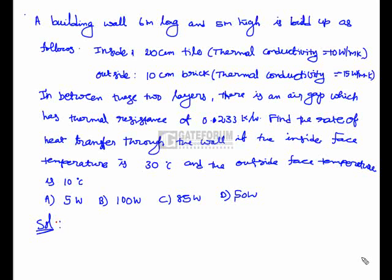A building wall 6m long and 5m high is built as follows: inside 20cm tile with thermal conductivity of 10 W/mK, and outside 10cm brick with thermal conductivity of 15 W/mK. In between these two layers there is an air gap with thermal resistance of 0.233 K/W. Find the rate of heat transfer through the wall if the inside temperature is 30°C and the outside temperature is 10°C.